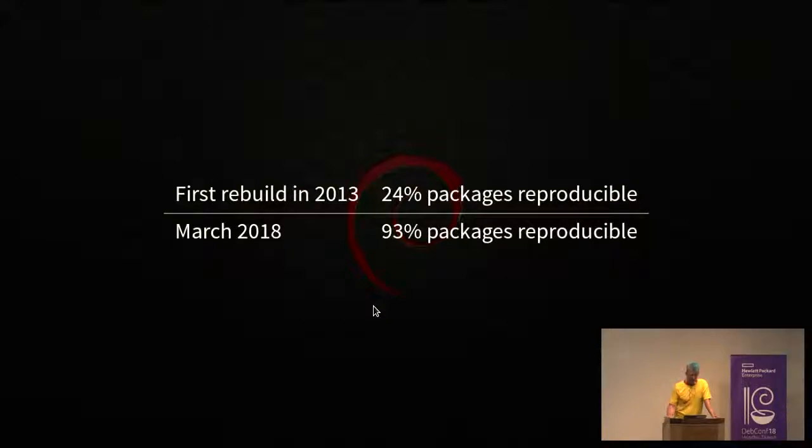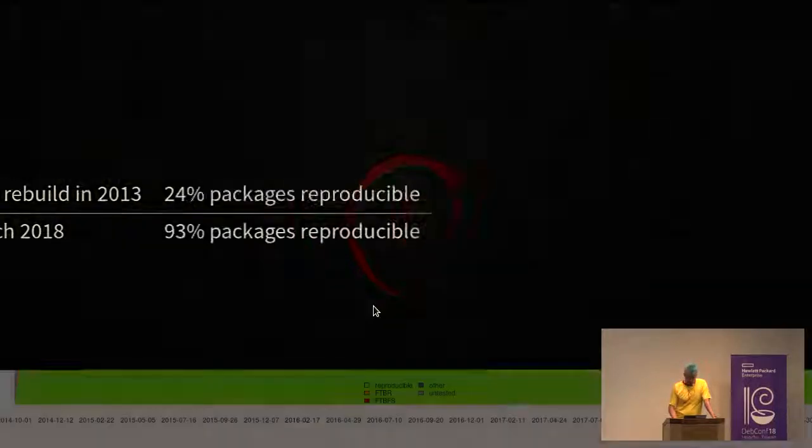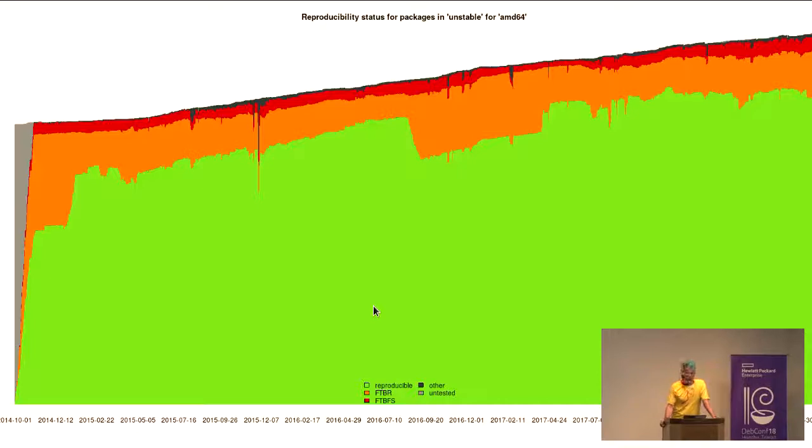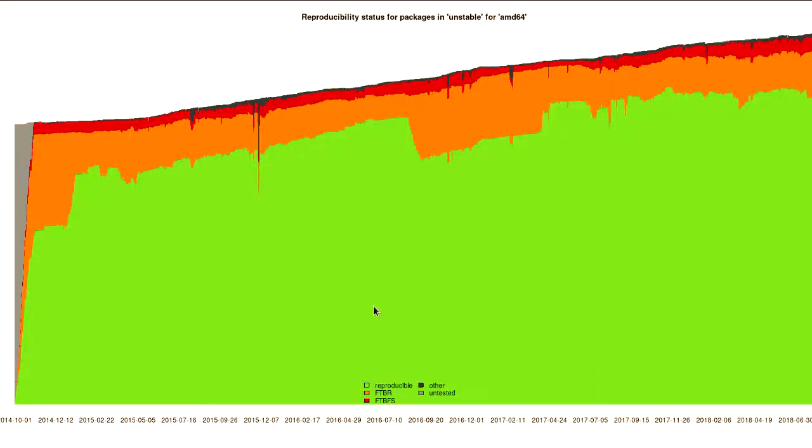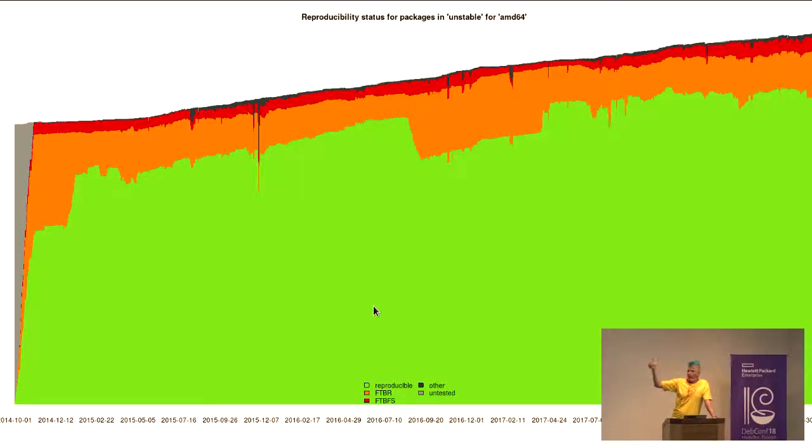When we first did this in 2013 that was still a manual test, only 24 packages were reproducible. Nowadays it's 93% without the build path variation because we only vary the build path when testing unstable but not testing. So this is the progress we've been having since 2014. This is Debian unstable on AMD64. And this big bump in the middle you see is when we introduce build path variations in unstable. When you look at the graph for testing, you don't see this bump and you see the 93%. Here it only reaches 88%.